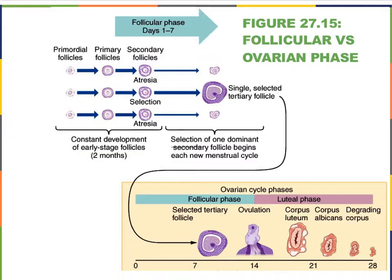With the help of this figure, we can relate oogenesis, which we see at the top here, with the three phases of the ovarian cycle. Here we see the primordial follicles maturing into our primary follicles, secondary follicles, and eventually we end up with one Graafian follicle or tertiary follicle.